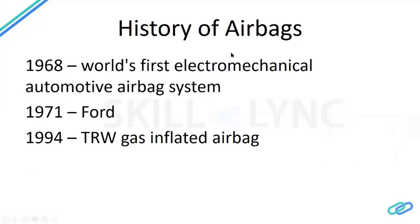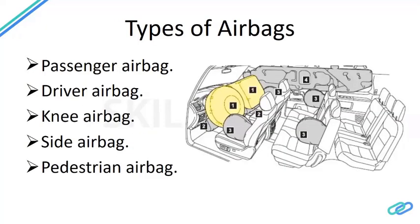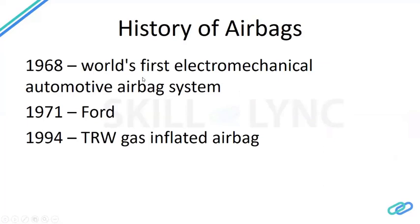The next topic is the history of airbags. Back in 1968, the world's first electromechanical automotive airbag system was developed. All airbags are controlled by an ECU unit, triggered by sensors — on the bumper for frontal crashes or on the door for side crashes. The ECU in turn triggers the inflator, which inflates the airbag. In 1994, TRW started full-fledged testing of airbag inflators and is now one of the leading manufacturers of airbag systems.